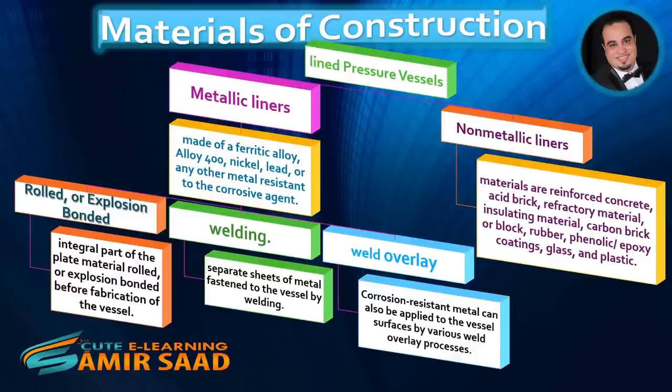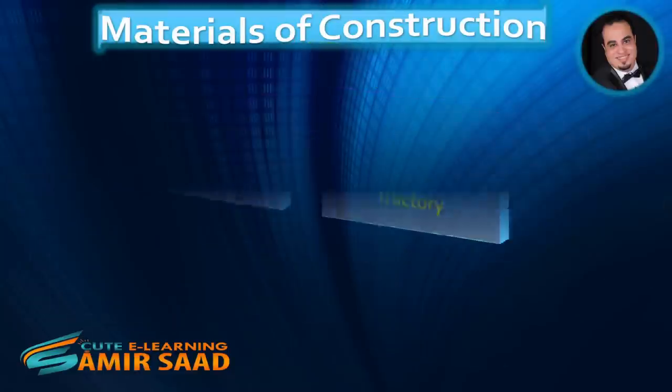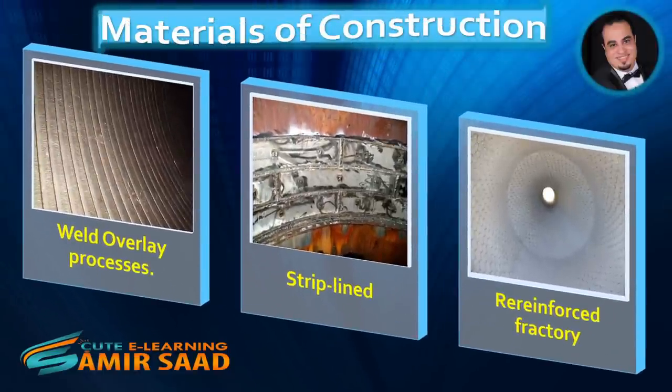Non-metallic liners: the most common non-metallic lining materials are reinforced concrete, acid brick, refractory material, insulating material, carbon brick or block, rubber, phenolic epoxy coatings, glass, and plastic. As illustrated in figures, examples include weld overlay, strip-lined, and reinforced refractory.